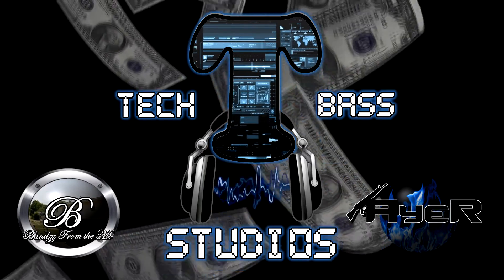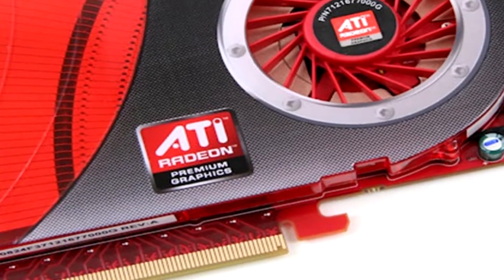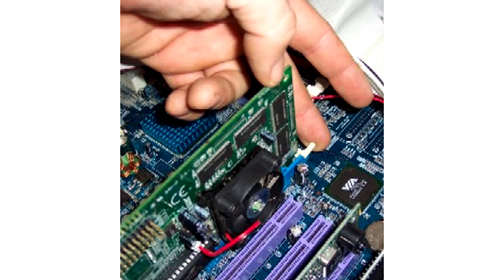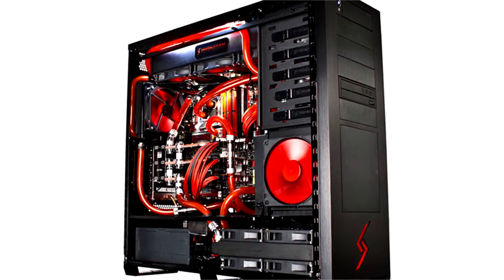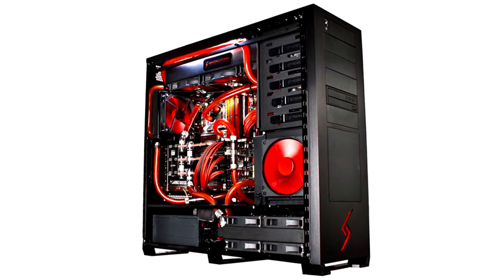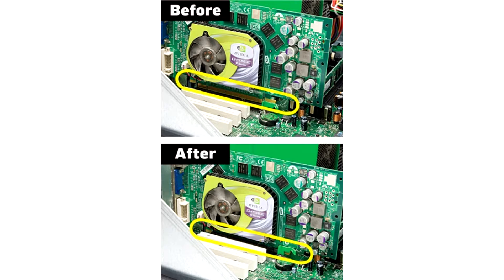If that doesn't work and you happen to have a dedicated graphics card, that might be your problem too. A graphics card is plugged directly into your motherboard so they are always located inside the computer case. Sometimes the simple fix is to reseat your graphics card, which just means you're going to take it out and put it back in — to make sure everything is connected right and that there's no dust or dirt blocking the connections.